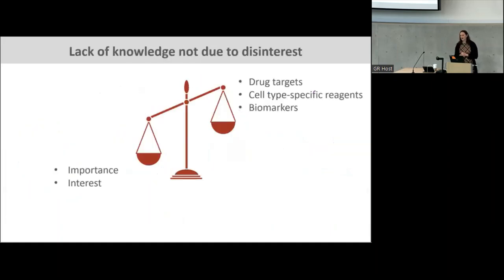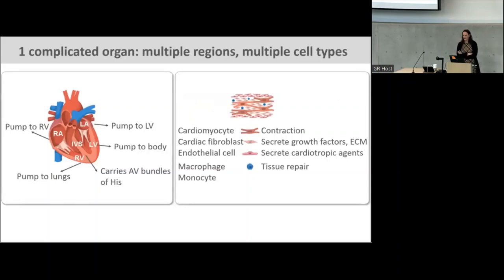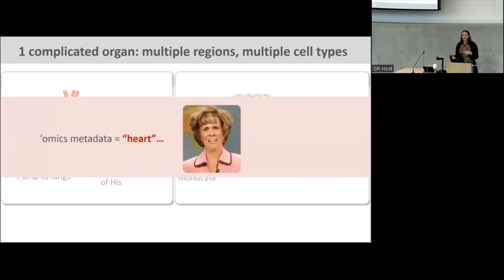The lack of knowledge we currently have about the proteins in the heart isn't because it's not important or because there isn't interest. It's because we haven't previously had the appropriate tools to define these molecules. The heart is a complicated organ — it has multiple regions, and the cells in these regions originate from different developmental precursors and have different functions. Unfortunately, especially in the omics field, manuscripts will often just say 'I took samples from the heart' without specifying where. I'd like to know exactly where from the heart — if you take the whole heart and homogenize it, I really can't get any information out of it.